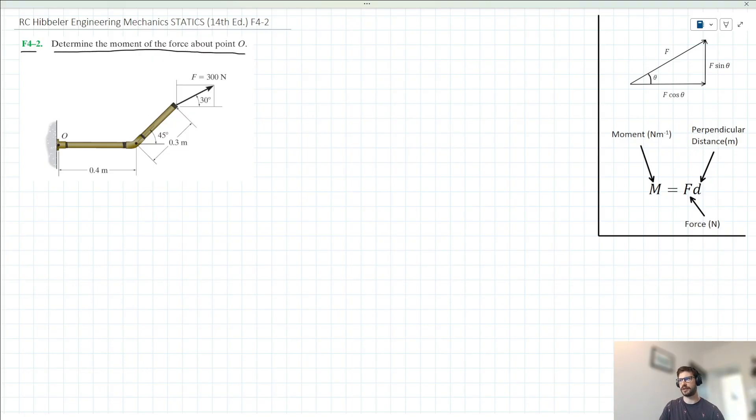So we have this diagram here, and we have one force acting 30 degrees to the horizontal at this point here. Now, to start off, I reckon a good place to start here would be to decompose force F into its horizontal and vertical components. We can use this idea that I've shown in the top right here to do that. So we could say that the horizontal component here is going to be 300 cos 30, and the vertical component here is going to be 300 sin 30.